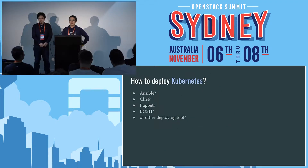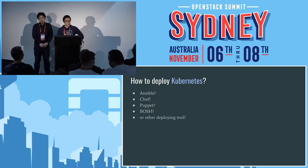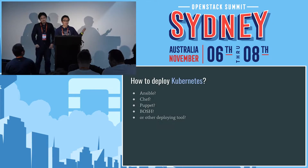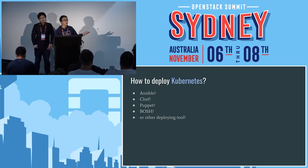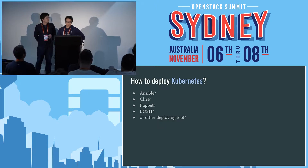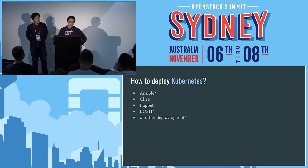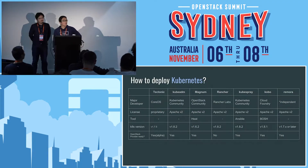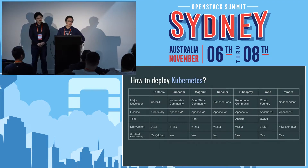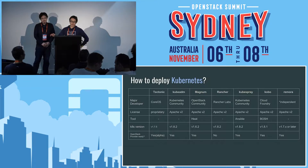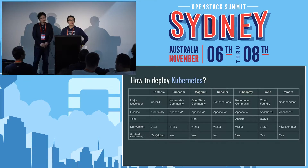So one question: how do you deploy Kubernetes? There are a lot of tools — Ansible, Chef, Puppet, or Bosh. These are very common tools to deploy and manage applications. And we also know some tools which specifically support Kubernetes deployment. These tools are for operating and managing Kubernetes, not only deployment.